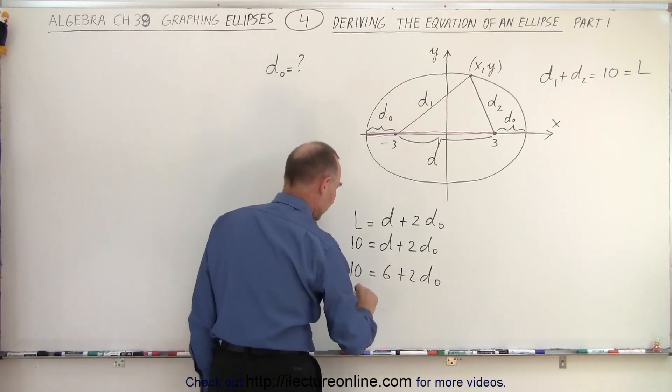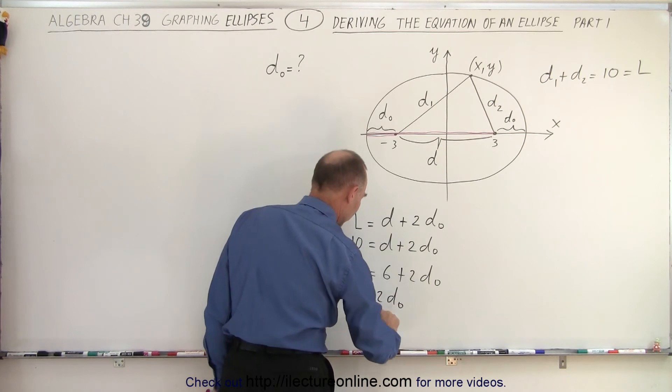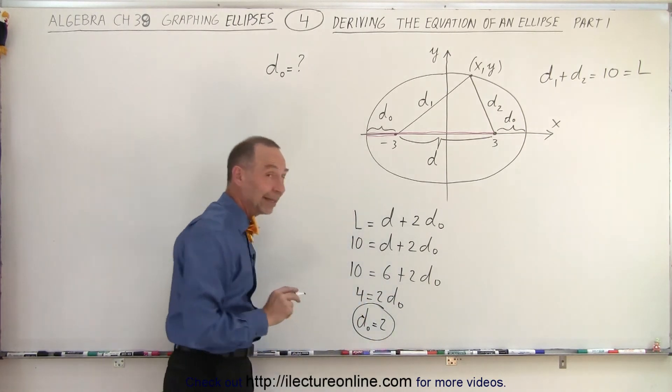Subtracting 6 from both sides, we get 4 is equal to 2d sub 0, or d sub 0 is equal to 2.